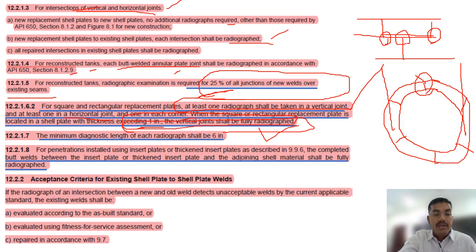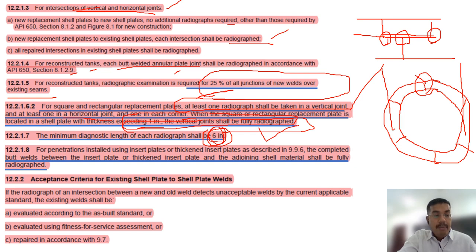The minimum diagnostic length of each radiograph shall be six inches — this is a close-book question. For penetrations installed using insert plates or thickened insert plates, the completed butt weld between the insert plate and the shell shall be fully radiographed.